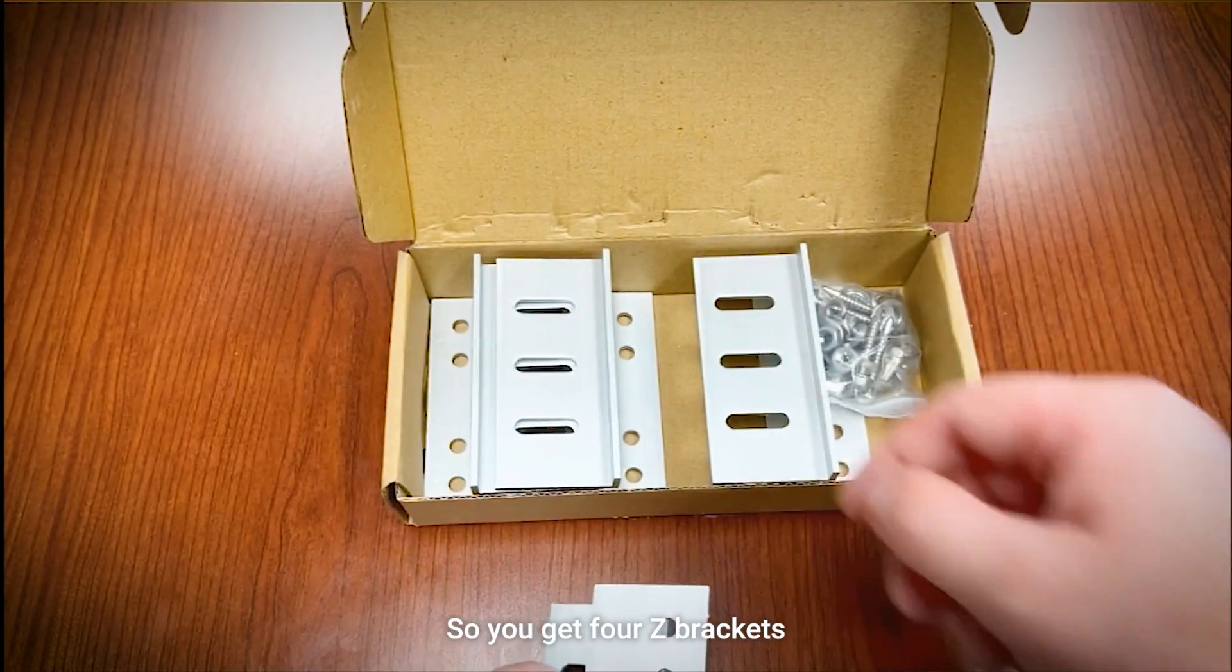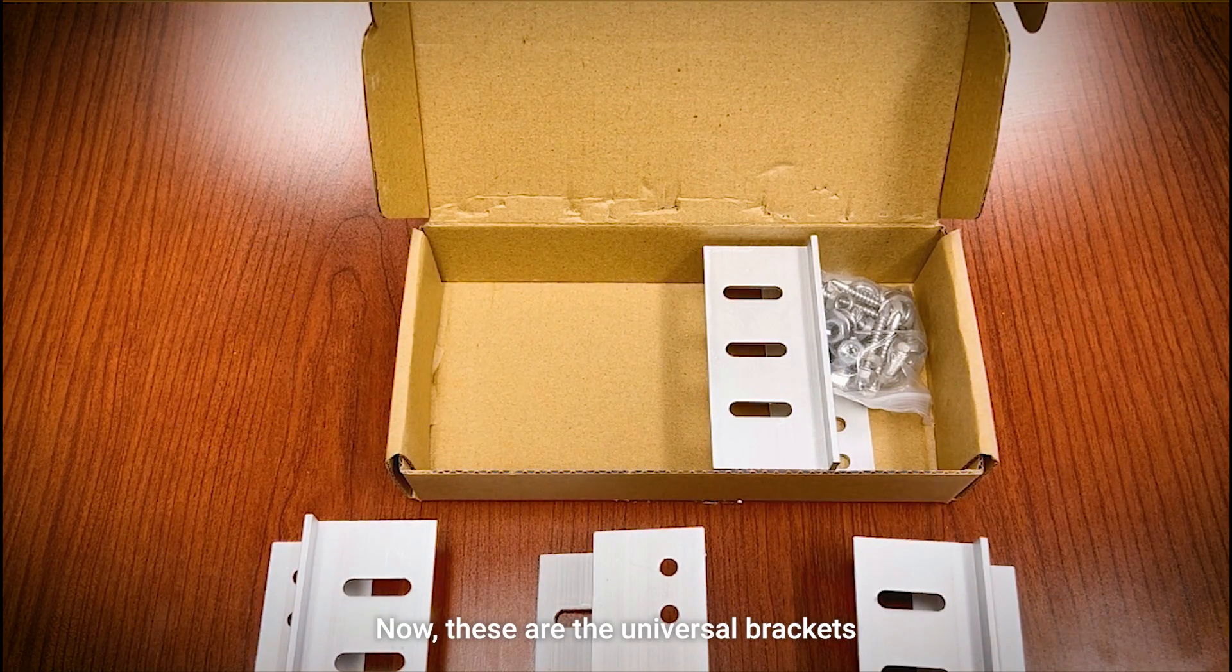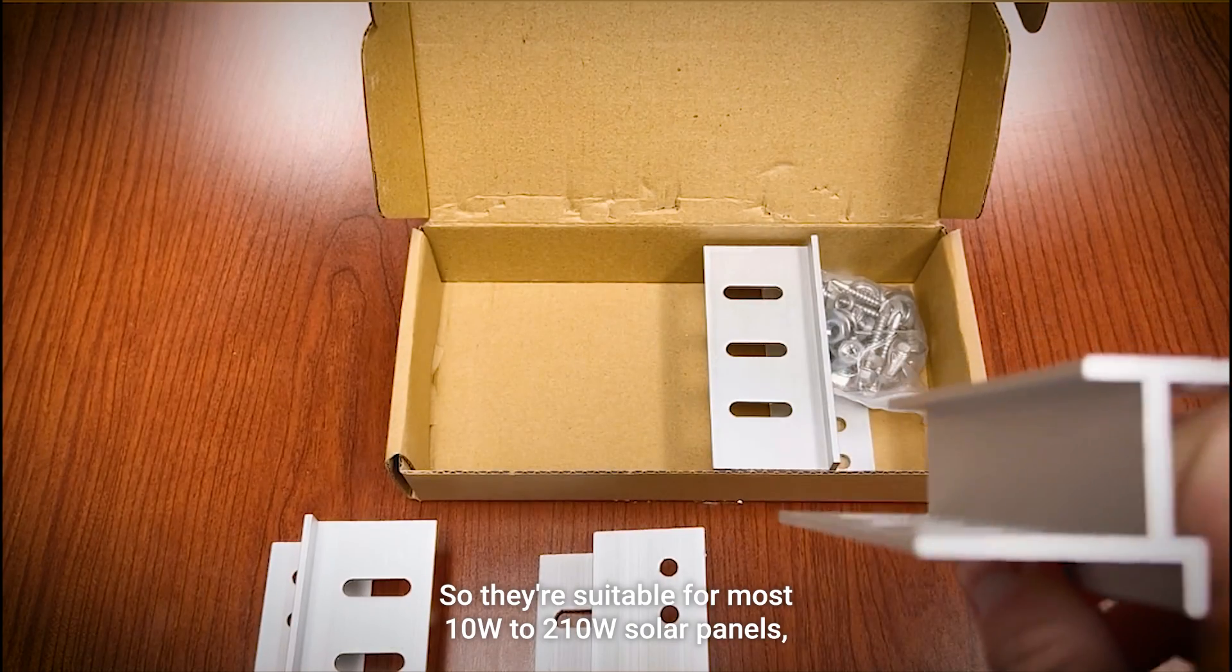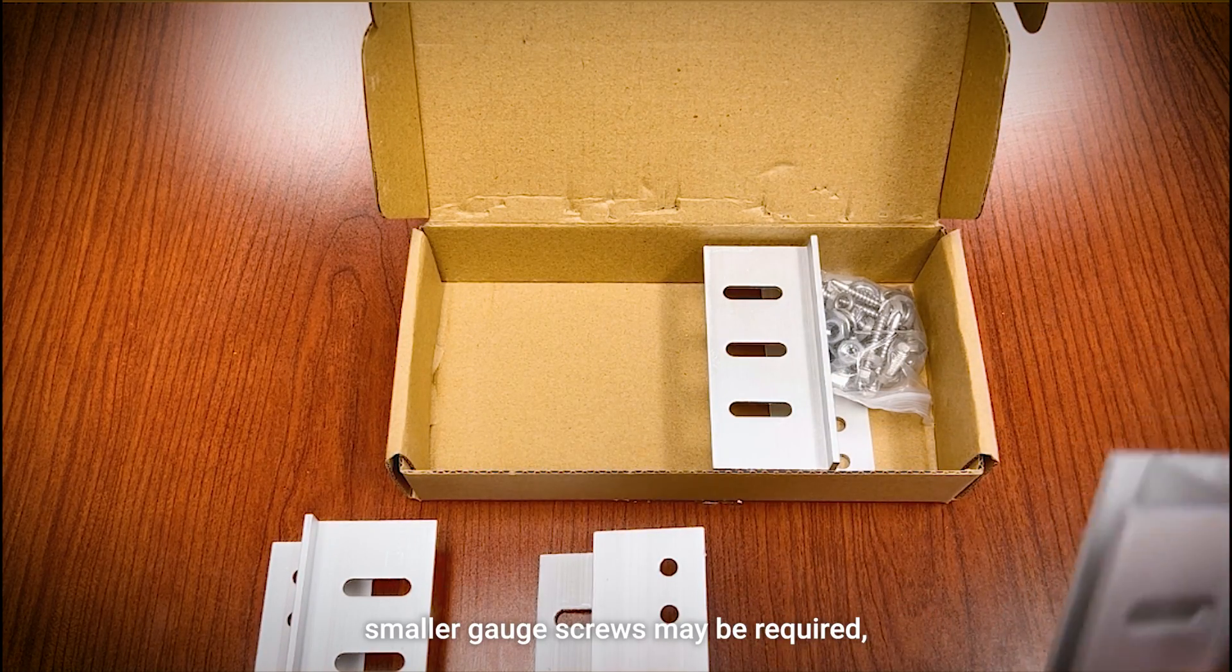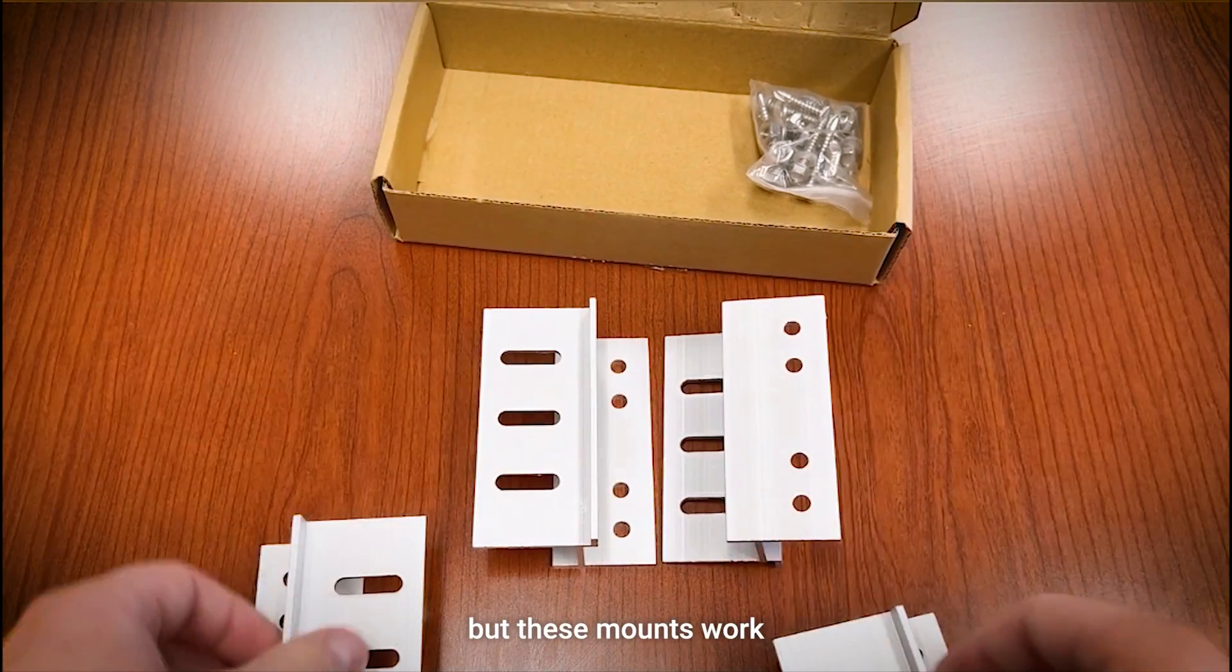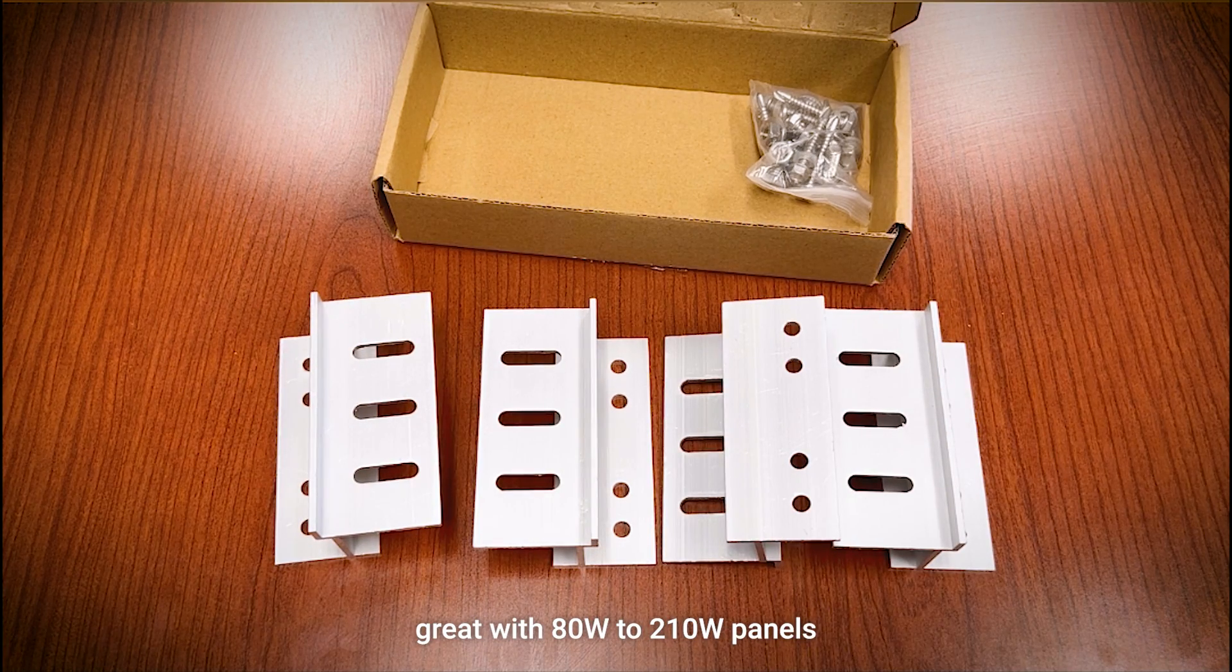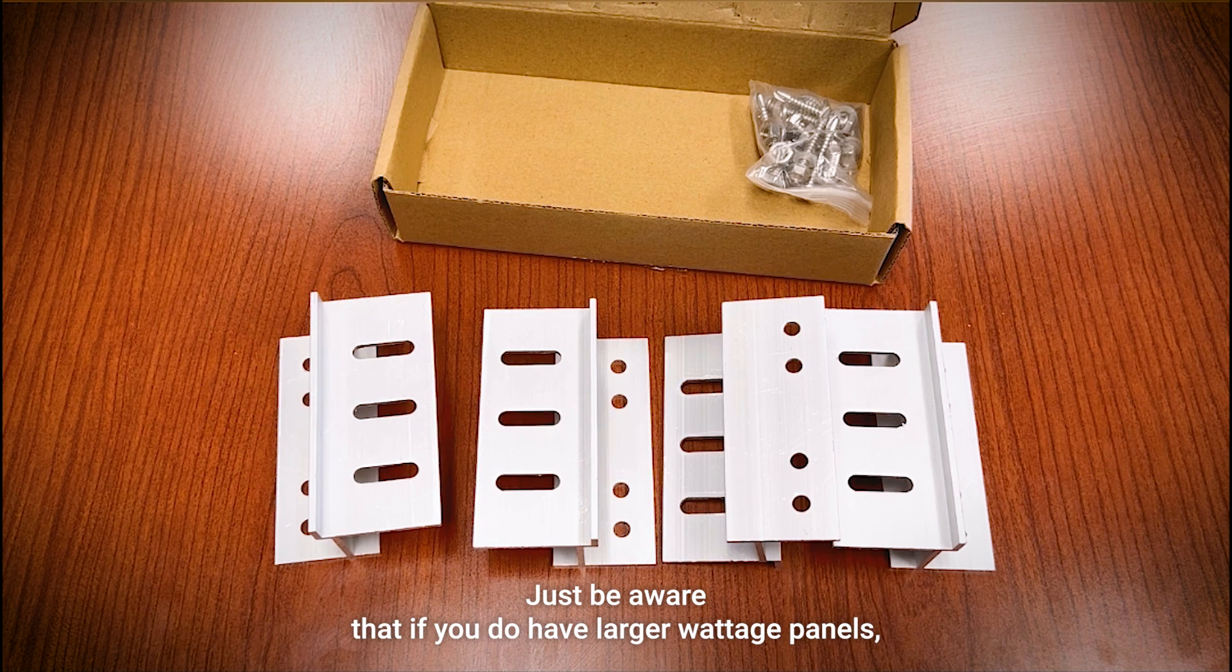So you get four Z brackets. Now these are the universal brackets, so they're suitable for most 10 watt to 210 watt solar panels. Smaller gauge screws may be required, but these mounts work great with 80 watt to 210 watt panels. Just be aware that if you do have larger wattage panels, two sets may be required.